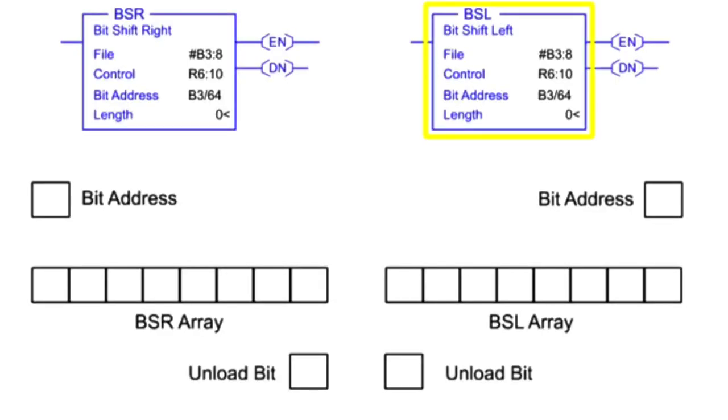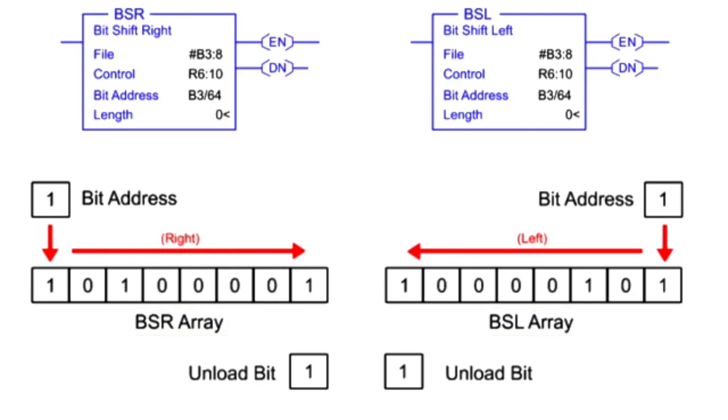The bit-shift-left and bit-shift-right instructions load data into a bit array one bit at a time. The data is shifted through the array and unloaded one bit at a time.